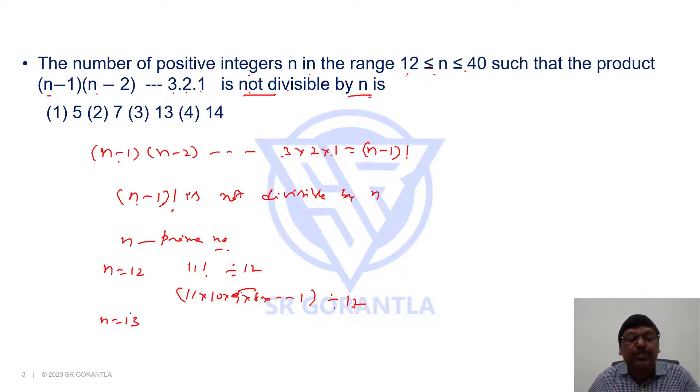But suppose if I take n equals to 13, a prime number. 13-1 = 12 factorial. Is it divisible by 13? No. Why? 12 factorial is nothing but, as you know, 1·2 up to 12. It is not divisible by 13 because 13 is not present here.